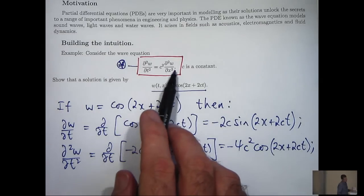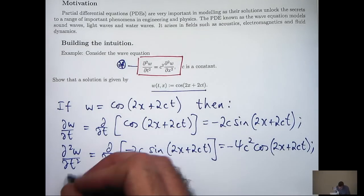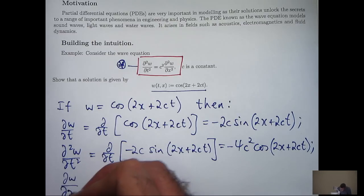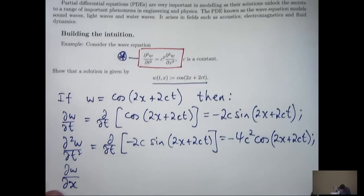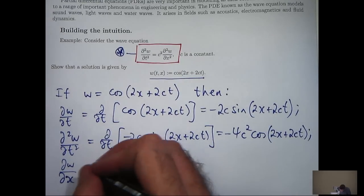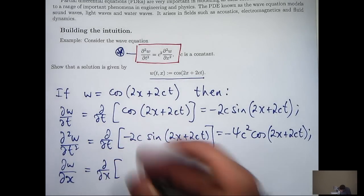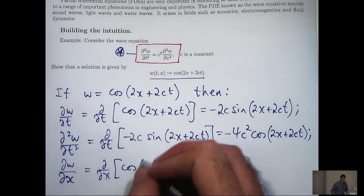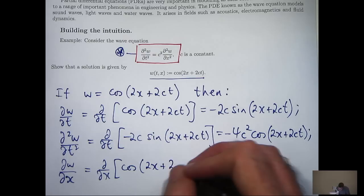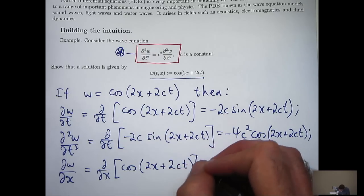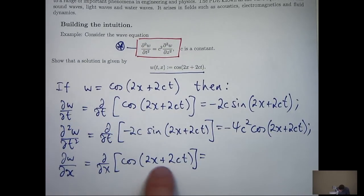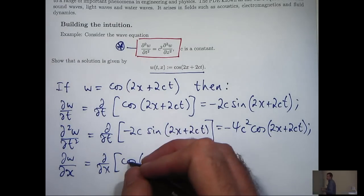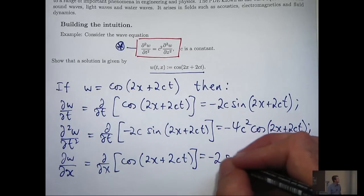To compute ∂²w/∂x², let's first compute ∂w/∂x. So we take w and differentiate it partially with respect to x this time. We hold t constant, c is a constant anyway, and we differentiate with respect to x. So that 2 is going to come to the front, and the cosine will go to minus sine.